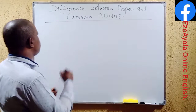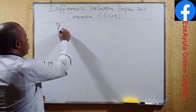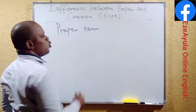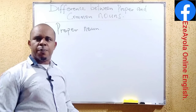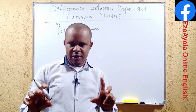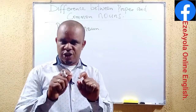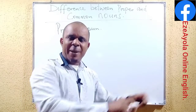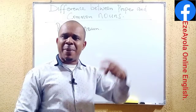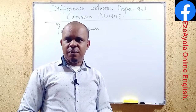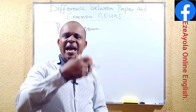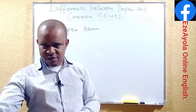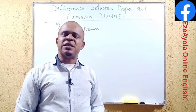Now, when we say proper noun, what do we mean? How do we define it? What is a proper noun originally? Proper nouns are those names given to particular things, particular persons, particular places. They are names given to particular persons, particular places, and particular things.